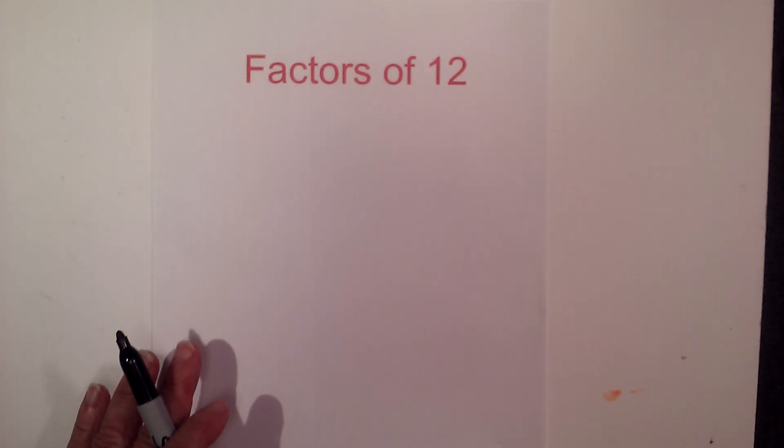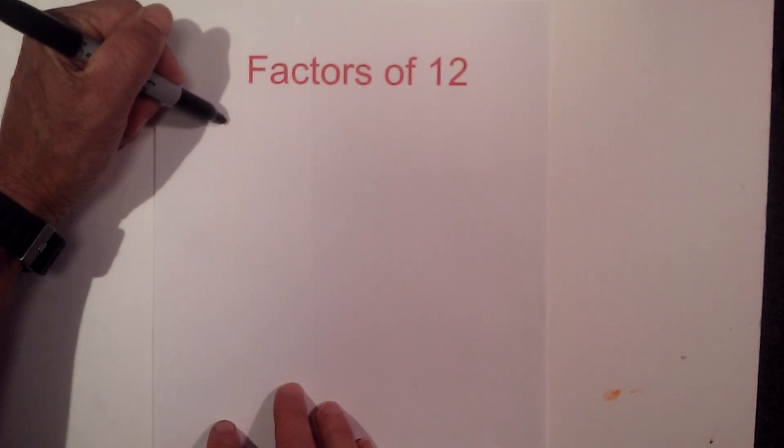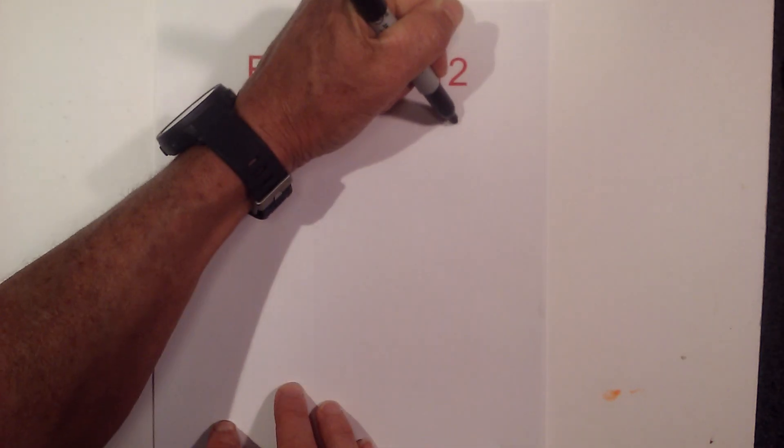Math and science: the factors of 12, the prime factors of 12, and the multiples of 12. So let's get started. I like to find factors this way, multiply 1 times